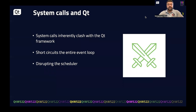If we try to implement what we just saw within the Qt framework, we're going to run into a slew of issues. System calls by their nature inherently clash with Qt. Qt has this event loop responsible for managing the UI and timing. By invoking system calls, we're creating another process and essentially short-circuiting the event loop of our Qt app, disrupting the scheduler entirely. So system calls are not necessarily compatible with the Qt framework.